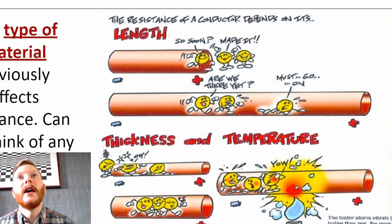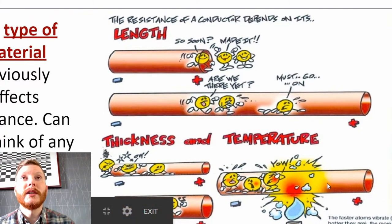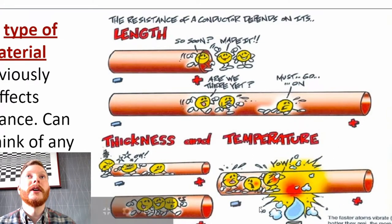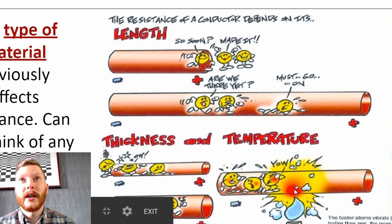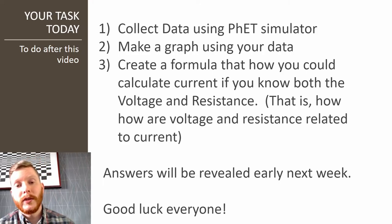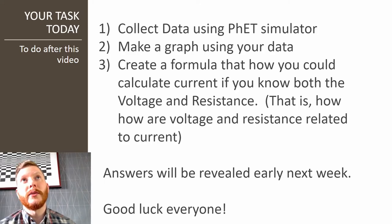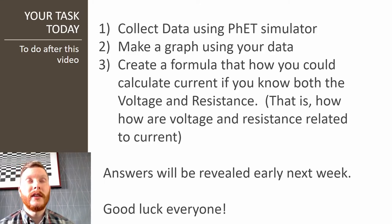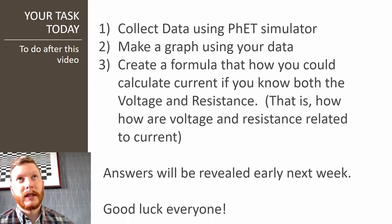Temperature matters as well. You always hear about keeping your computer cool — when the temperature gets really hot, it's harder for the electrons to flow through. Your task today: number one, collect a bunch of data from the simulator we used last time. Two, make a graph from that data — you could do it by hand, but why not use Google Sheets?